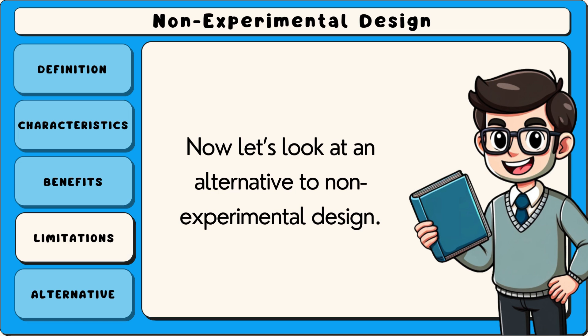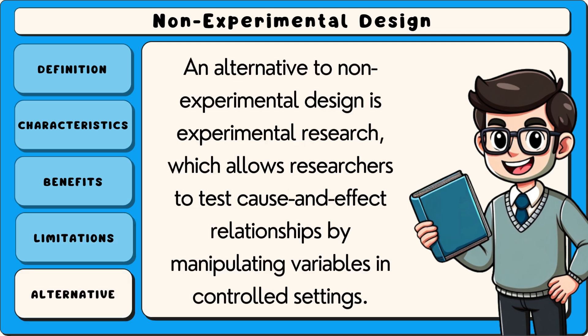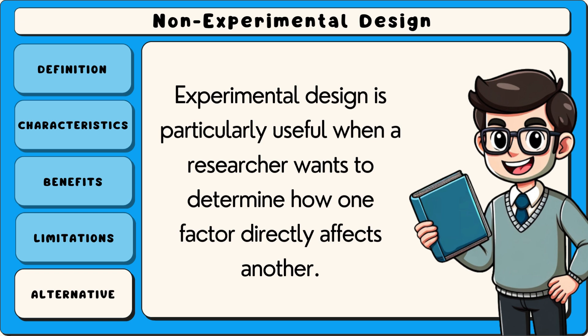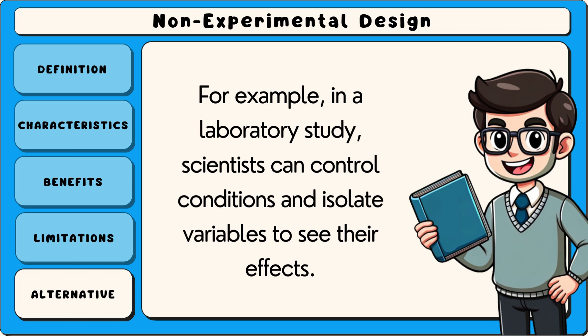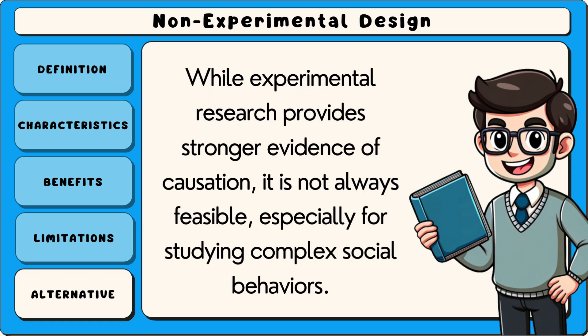Now let's look at an alternative to non-experimental design. An alternative is experimental research, which allows researchers to test cause-and-effect relationships by manipulating variables in controlled settings. Experimental design is particularly useful when a researcher wants to determine how one factor directly affects another. For example, in a laboratory study, scientists can control conditions and isolate variables to see their effects. While experimental research provides stronger evidence of causation, it is not always feasible, especially for studying complex social behaviours.